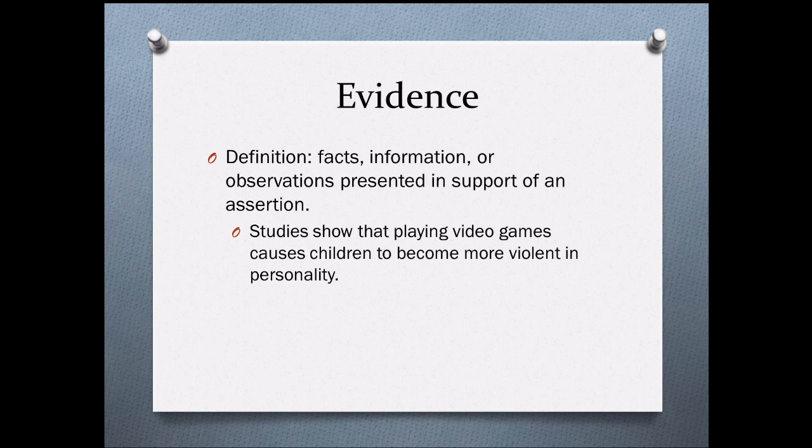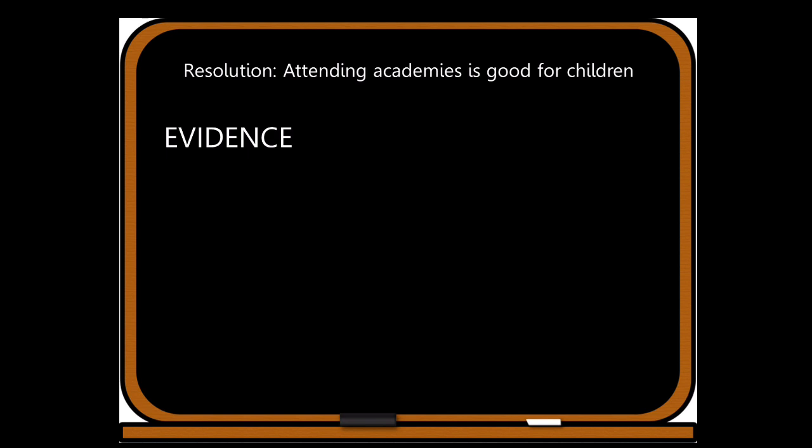The final part of an argument is to have the correct evidence. The definition of evidence is facts, information, or observations presented in support of an assertion. Here is an example: studies show that playing video games causes children to become more violent in personality. This evidence is missing some key parts that more advanced debaters include — specifically, an author who did the studies and the date when the studies were conducted. These two pieces of information are very important when providing statistics, facts, or information relevant to the topic.